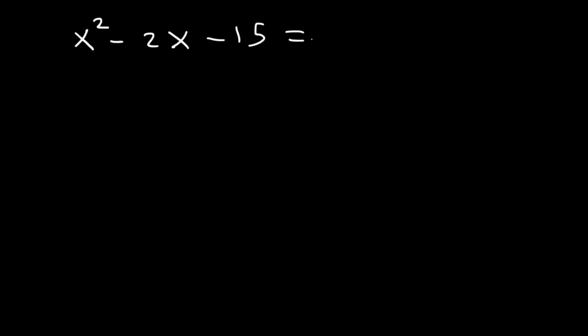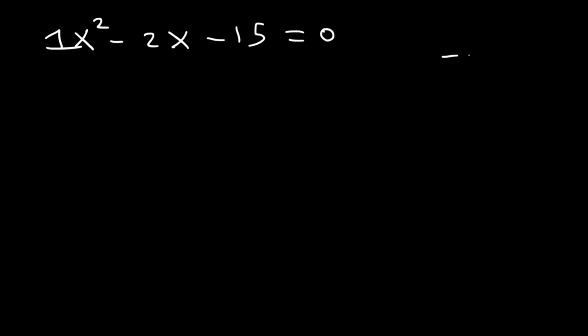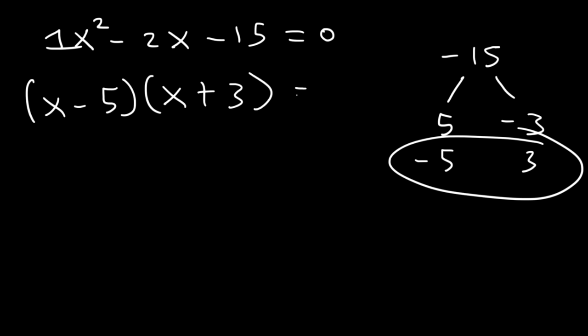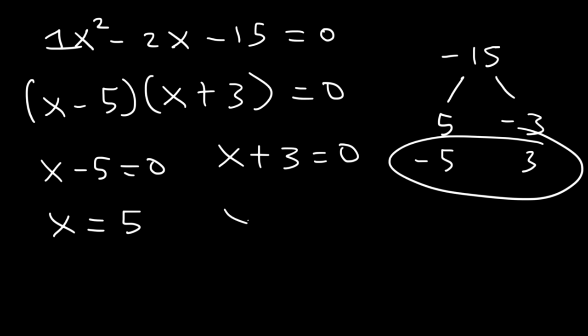Now what if we have a trinomial — x squared minus 2x minus 15 — and the leading coefficient is 1? How can we factor this expression? All you need to do is find two numbers that multiply to negative 15 but add to negative 2. Numbers that multiply to 15 are 5 and 3. So we have positive 5 and negative 3, or negative 5 and positive 3. Negative 5 plus 3 adds up to negative 2, so this is what we want. It factors as x minus 5 times x plus 3. So x is equal to 5 and x is equal to negative 3.